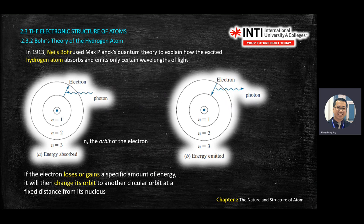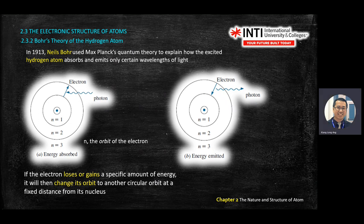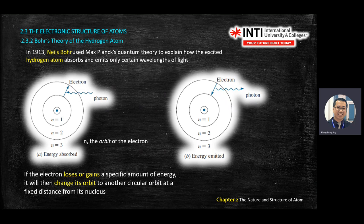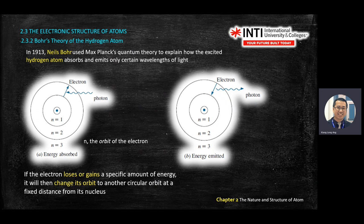When energy is emitted, the element loses energy; the electron moves from an outer orbit to an inner orbit. When energy is absorbed, the electron moves outward. Think of it like driving on a highway: if you have high energy, you are in the outer (faster) lane. If you want to slow down, you move to the inner lane - same principle as electron orbits.